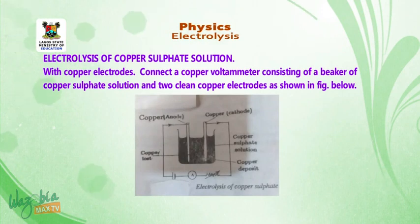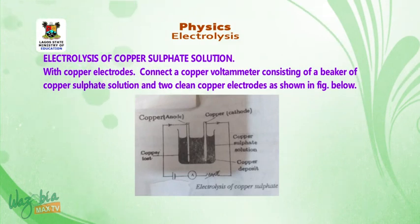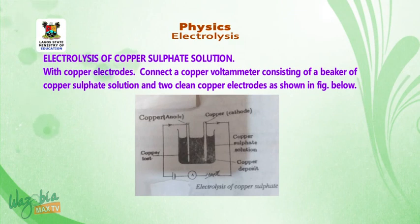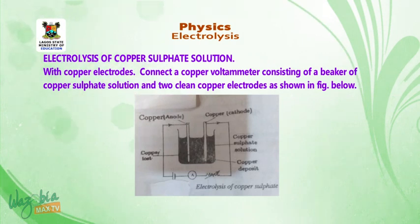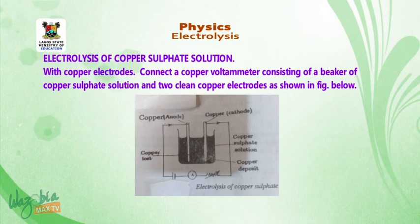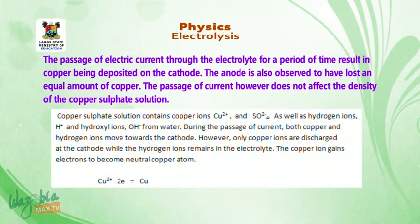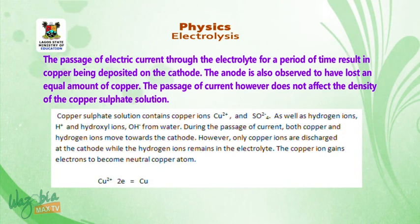Electrolysis of copper sulfate solution with copper electrodes: connect a copper voltammeter consisting of a beaker of copper sulfate solution and two clean copper electrodes as shown in the diagram. The diagram shows a voltammeter containing copper sulfate solution with two copper electrodes — one for anode, one for cathode — all connected to a battery, an ammeter, and a rheostat to maintain a steady current in series. The passage of electric current through the electrolyte results in copper being deposited on the cathode. The anode is also observed to have lost an equal amount of copper.